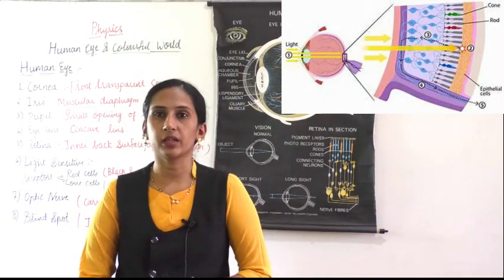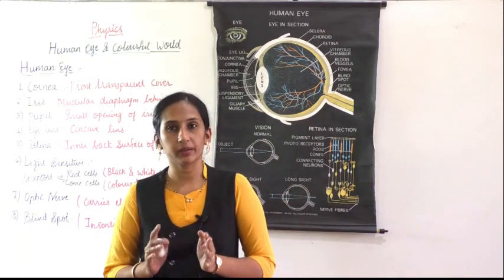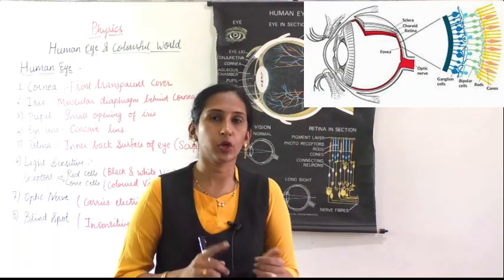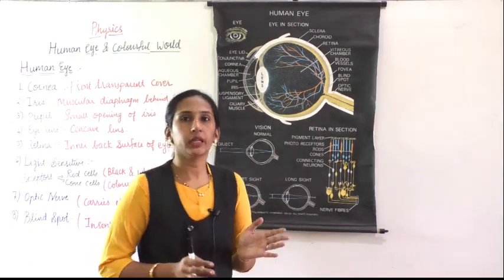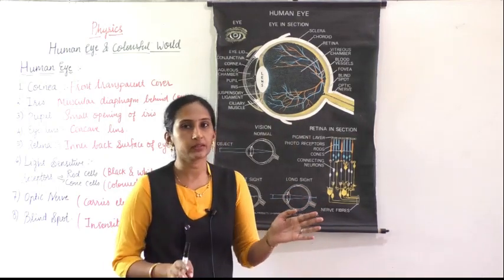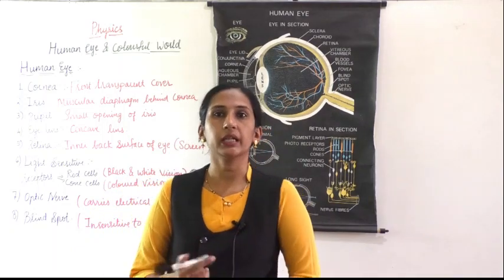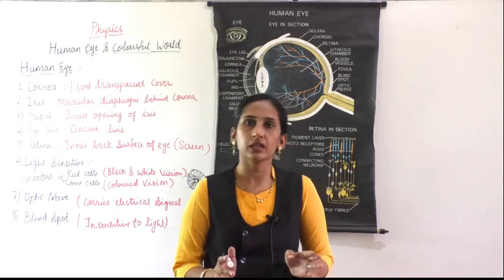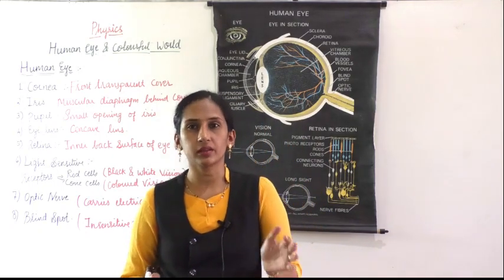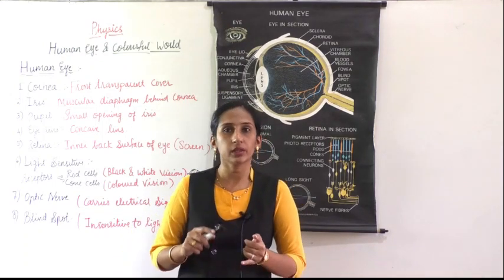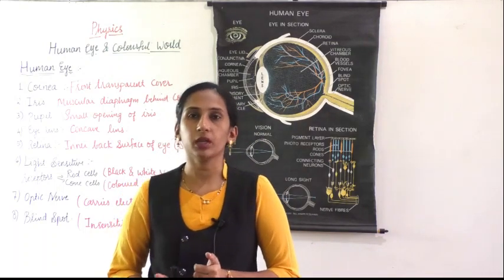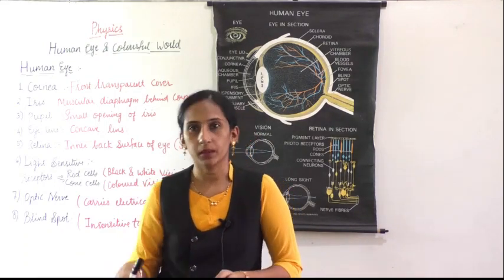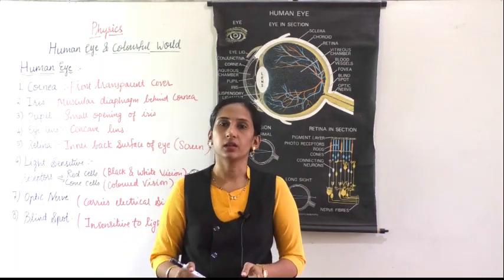During daytime you can see everything clearly in color; in darkness you cannot see colorful things — everything appears dark. This is determined by rod and cone cells. Cone cells are active in light and enable colored vision. Rod cells become active in darkness and allow you to see only outlines of objects, not colors.